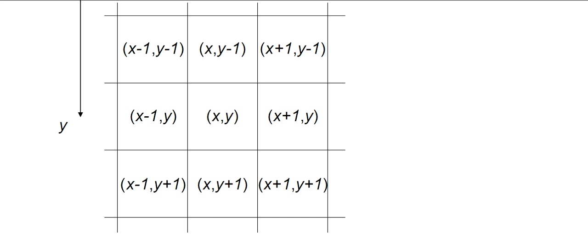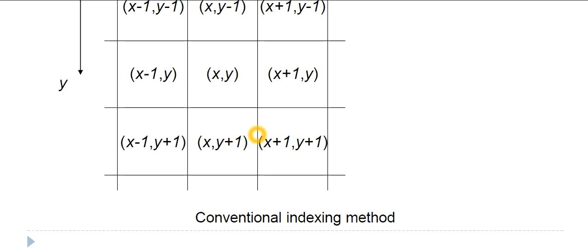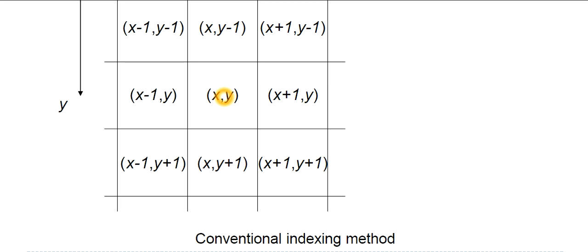The second row coordinates are: x-1, y; x, y; x plus 1, y. Similarly, the third row has y become y plus 1 throughout, giving us: x-1, y plus 1; x, y plus 1; and x plus 1, y plus 1. So if we are considering the particular pixel at x, y, then the other pixels surrounding it will have these coordinate values. You can take a screenshot.